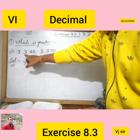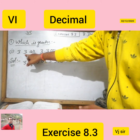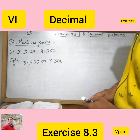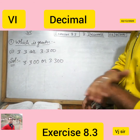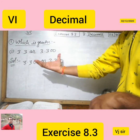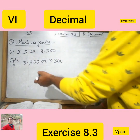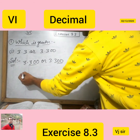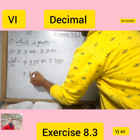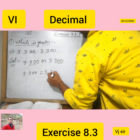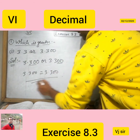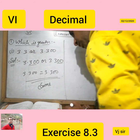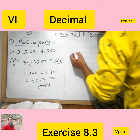Now we move to question i: is 3.3 greater or 3.300? We put two zeros to make equal decimal places, so we get 3.300 and 3.300. You can see both decimals are now equal, so 3.300 is equal to 3.300. Both numbers are the same.